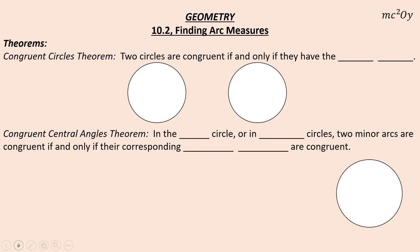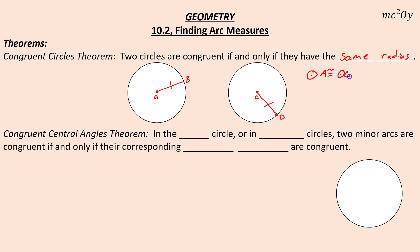The congruent circles theorem: two circles are congruent if and only if they have the same radius. So if I label circle A with radius AB, and circle C with radius CD, and I mark those congruent, I would know that circle A is congruent to circle C because AB is congruent to CD.